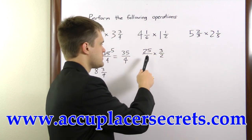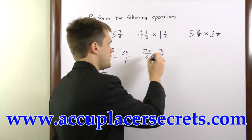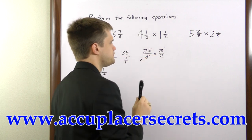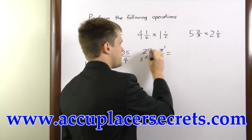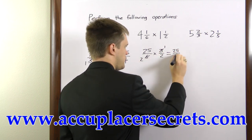Now, once again, we can cancel here. 6 and 3 are both divisible by 3. We'll divide 3 by 3 and get 1, and 6 by 3 and get 2. So then we can multiply. 25 times 1 is 25. 2 times 2 is 4.